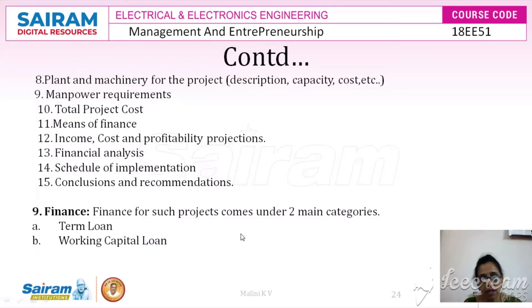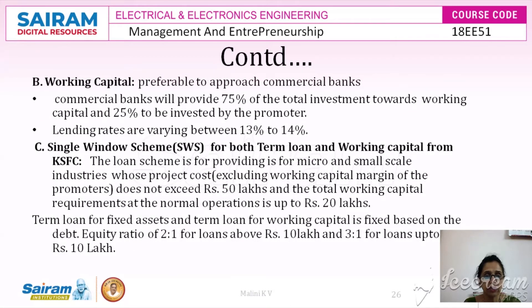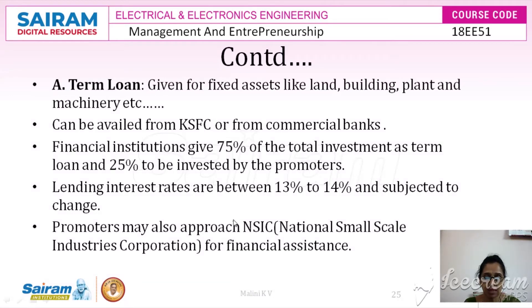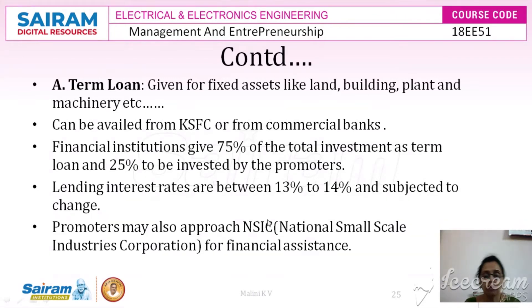Finance for such projects comes under two main categories: the term loan and the working capital loan. The term loan is given for the total fixed assets such as land, building, plant, and machinery. It can be availed from Karnataka State Financial Corporation (KSFC) if the entrepreneur is opening a small scale industry in Karnataka, or from any commercial bank such as State Bank of India or Punjab National Bank.